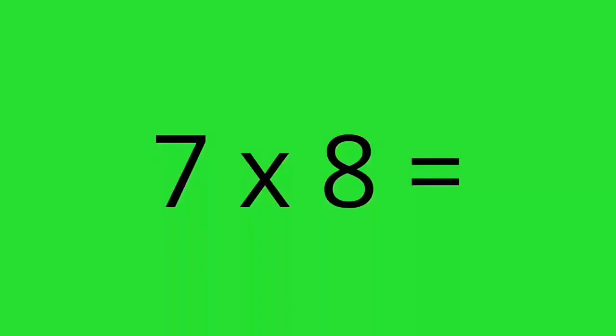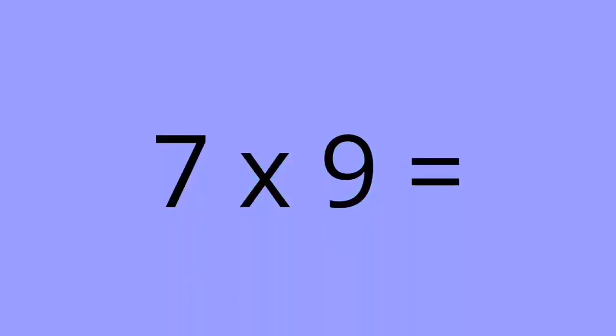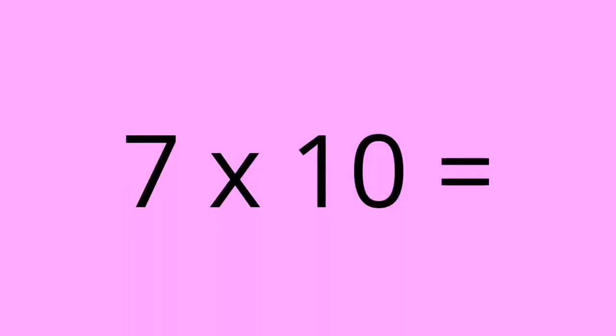7 times 7 equals 49. 7 times 8 equals 56. 7 times 9 equals 63. 7 times 10 equals 70.